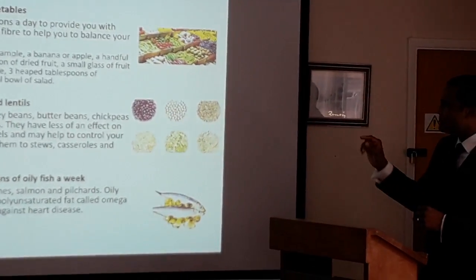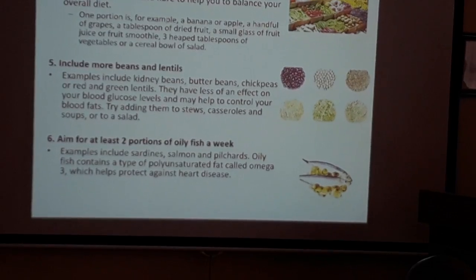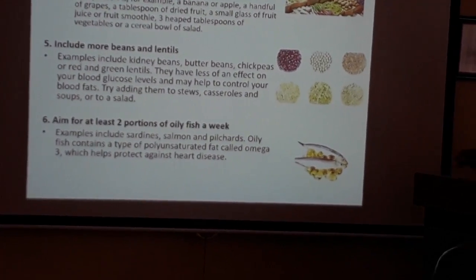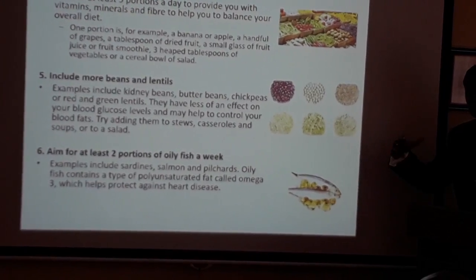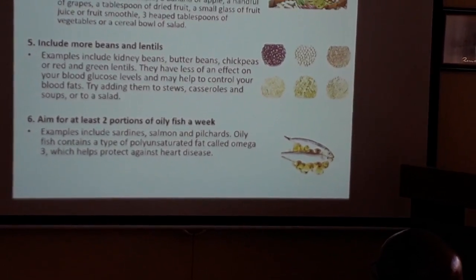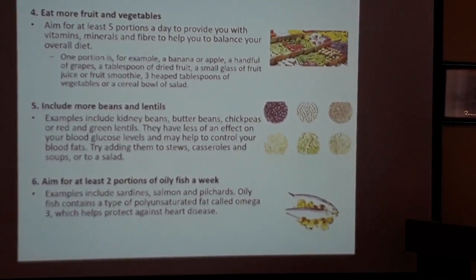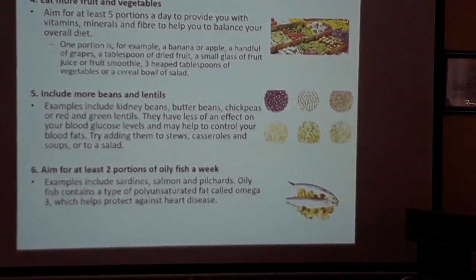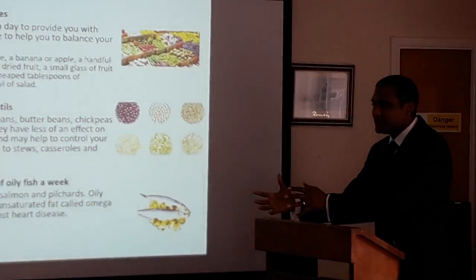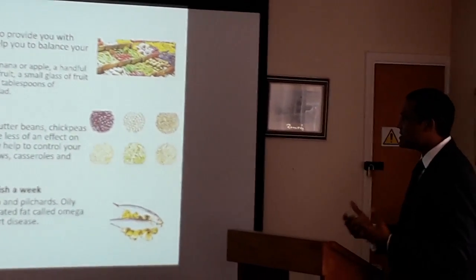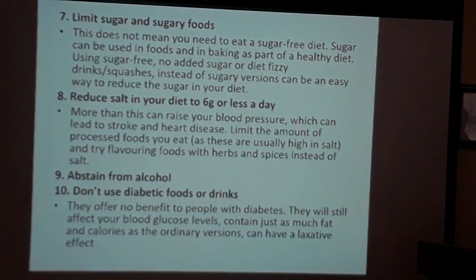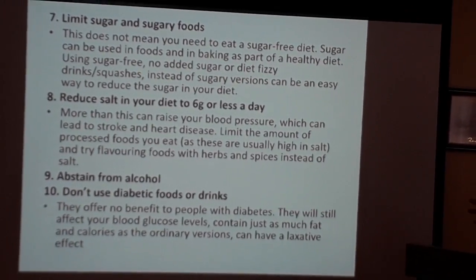Aim for two portions of oily fish per week. For vegans, an omega-3 supplement is an alternative. Fish oil contains omega-3, which is heart-healthy — you'll even see some butters marketed as containing omega-3. Limit sugar and sugary foods and drinks. Governments have introduced sugar taxes on fizzy drinks — if it's sweet, it's probably best avoided.